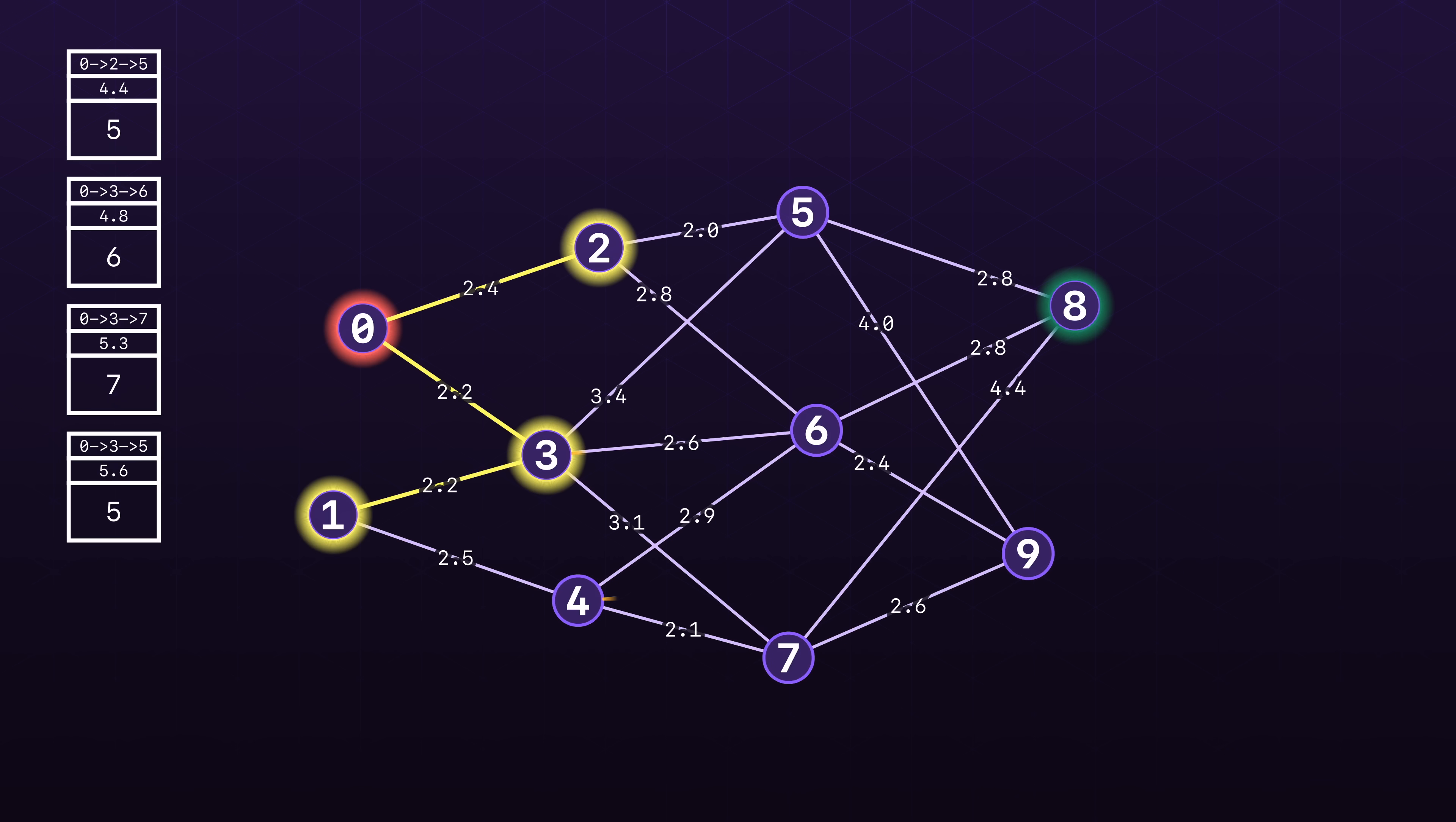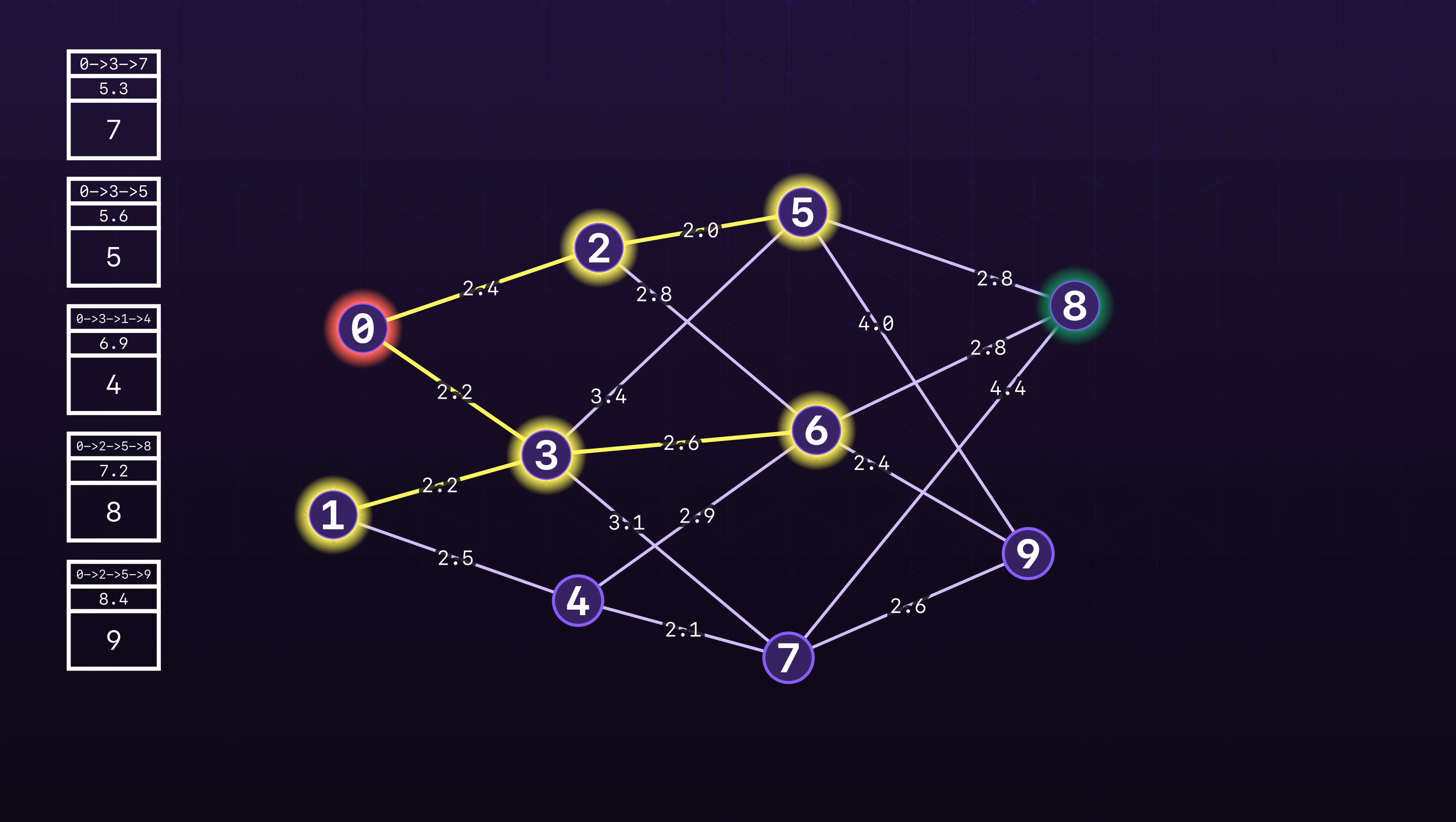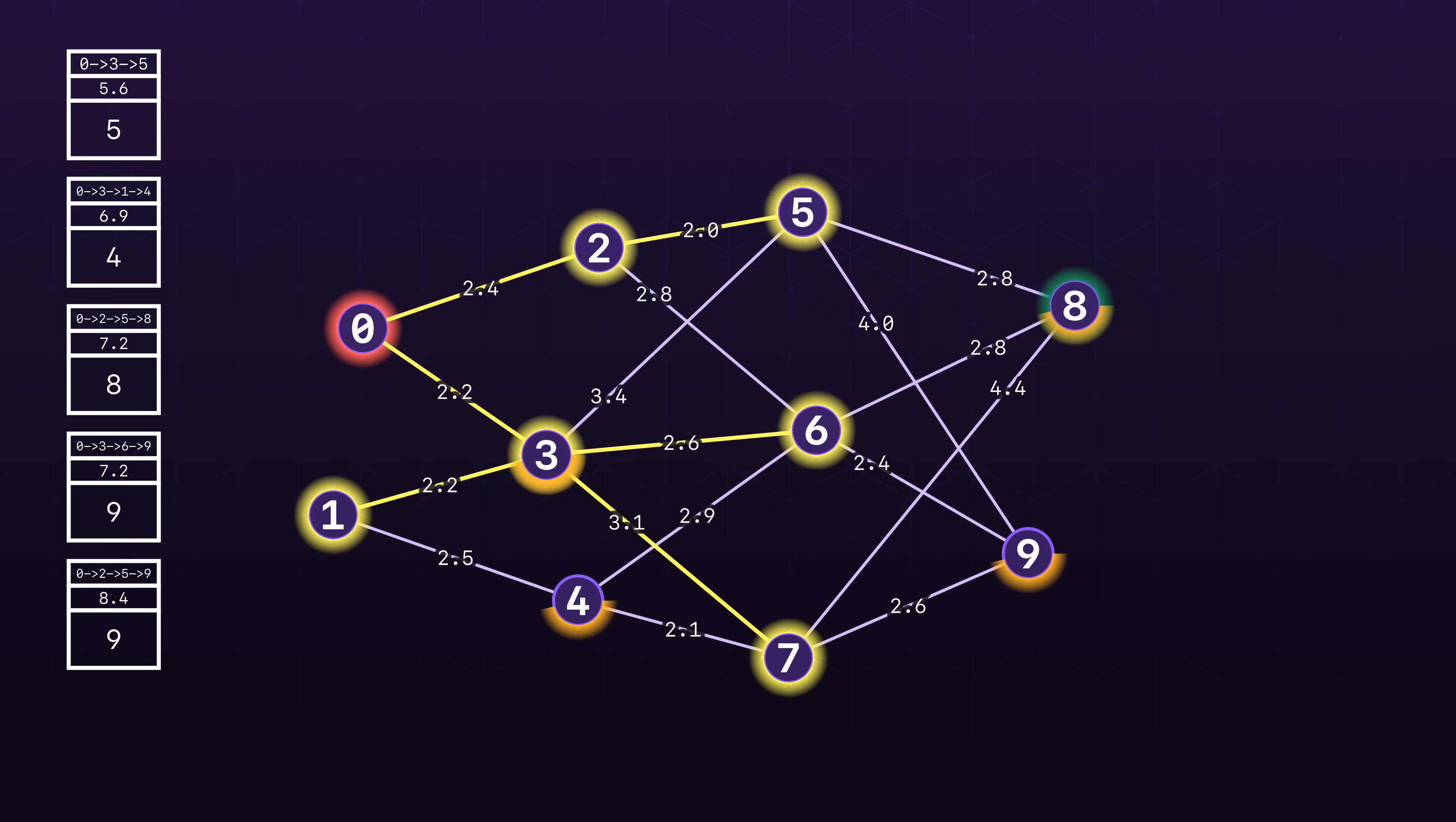Again, the most important note here is that every time we pop off a node from the priority queue, we found the shortest path to that node. The algorithm slowly expands from the starting node and incrementally builds optimal paths to intermediate nodes.